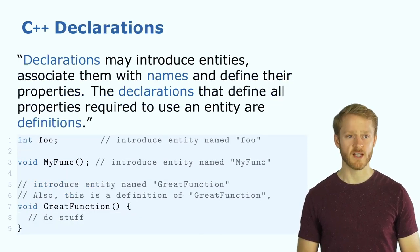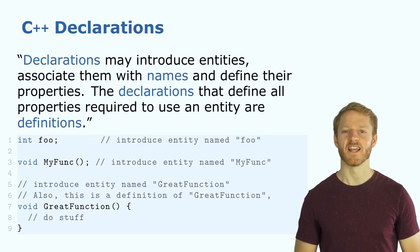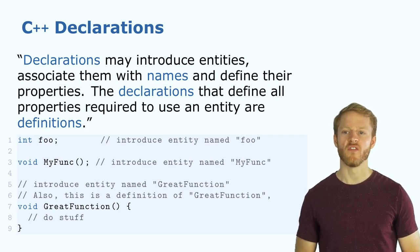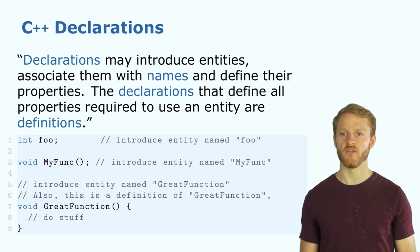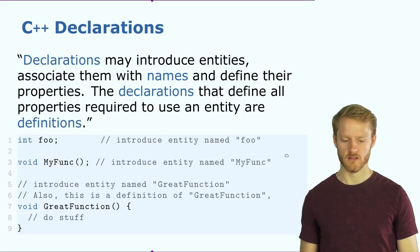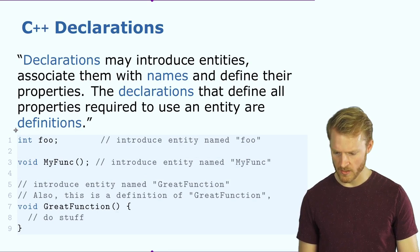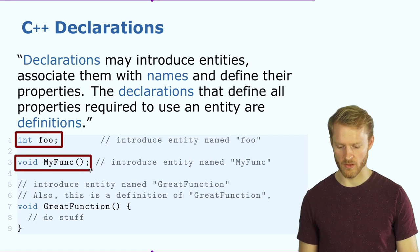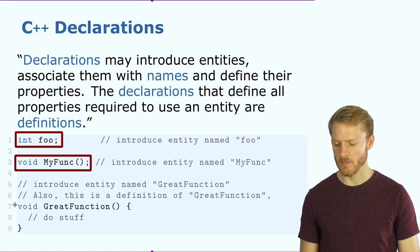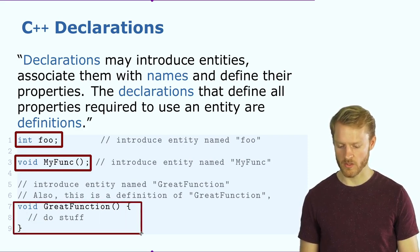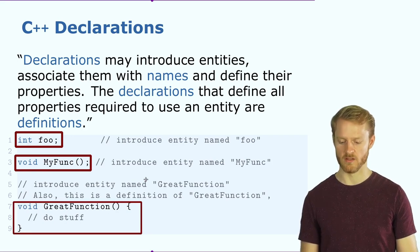What's a declaration in C++? A declaration may introduce entities and associate them with names. When we define all the properties of an entity, we say we are defining it. For example, we can introduce a new entity called foo, or a function called my_func. But when we provide all the properties, we say we are defining that function — like this 'great' function here.